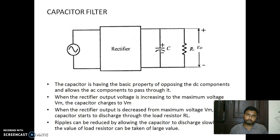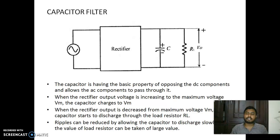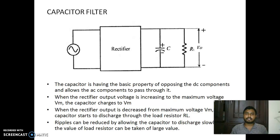Theoretically, a capacitor has the basic property of opposing the DC component and allowing the AC component to pass through it. At the output of the rectifier we have pulsating DC — meaning unidirectional DC is there but it is pulsating. Along with it, some AC components are present, and those AC components will be bypassed by the capacitor.